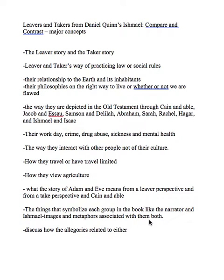You can also discuss how the allegories relate to either group. Sometimes in allegories you've got two sets of gods, and some of them don't go along with the plan and some of them do. I just thought this kind of list may be helpful for those of you who are struggling to figure out something to write about.